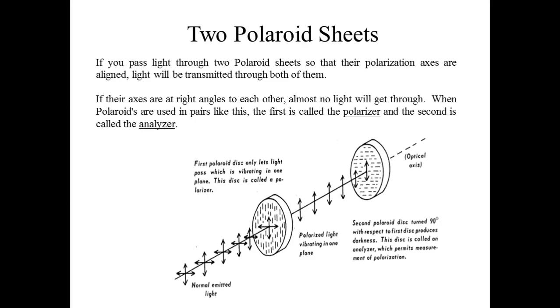What happens if we pass light through two polaroid sheets so that their polarization axes are aligned? The light will be transmitted through both of them.